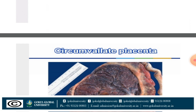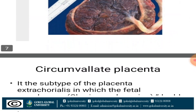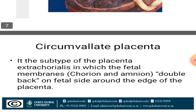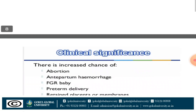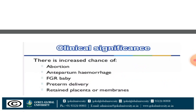The second condition is placental extrachorialis, which is divided into two types: circumvallate placenta and placenta marginata. Circumvallate placenta is the subtype of placenta extrachorialis in which the chorion membrane or amnion membrane is doubled back on the fetal side around the edge of the placenta.